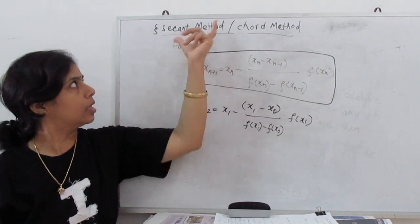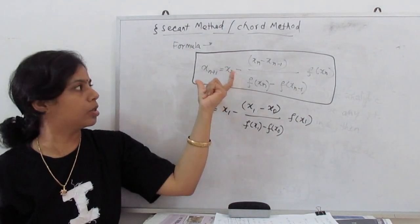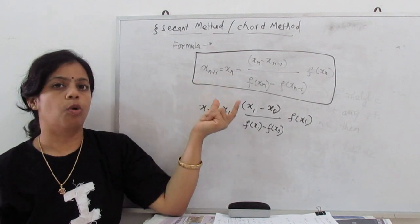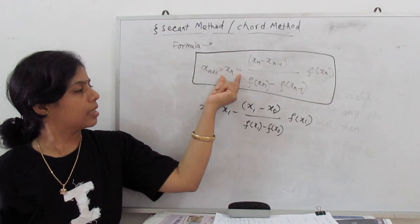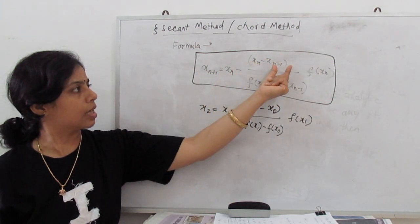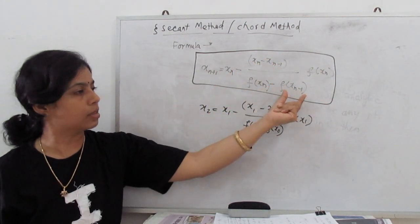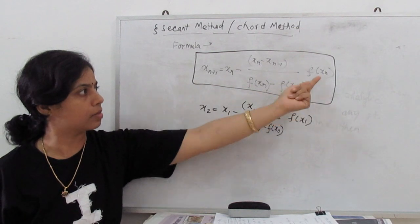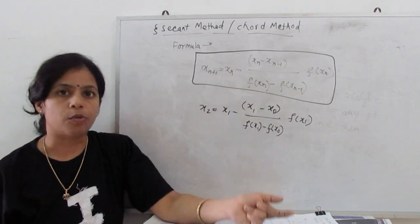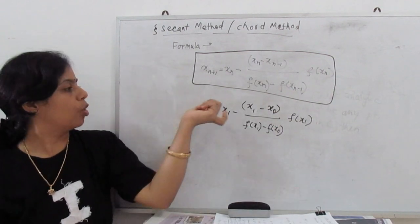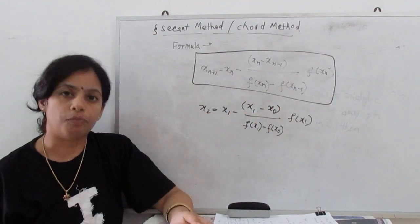The formula for this method: x_(n+1) = x_n - [(x_n - x_(n-1))/(f(x_n) - f(x_(n-1)))] × f(x_n). If we want to find the second iteration, x_0 and x_1 are the two initial values.